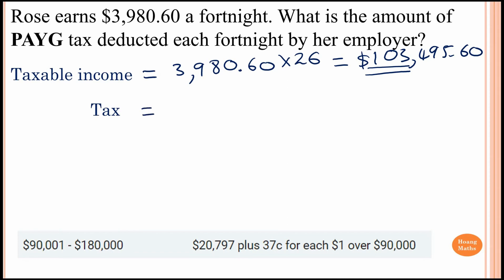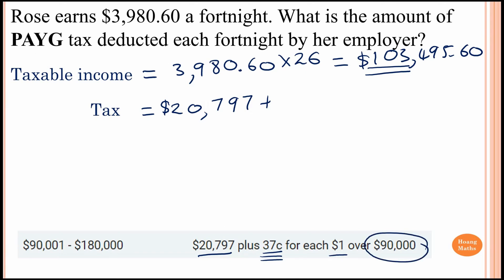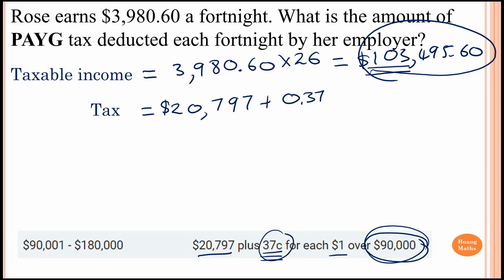Now her tax is calculated as follows: first she has to pay the base amount of $20,797, plus $0.37 for every dollar above $90,000. So we need to find the difference between her income and $90,000, then multiply by 0.37.